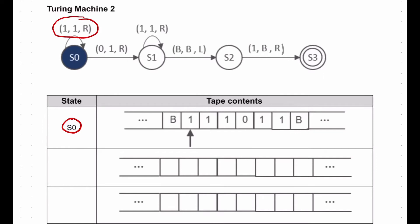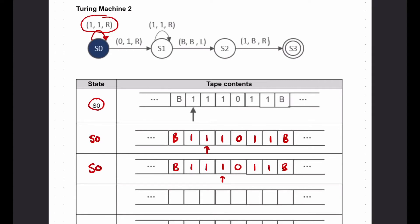The tape head is pointing at a 1, so I look at state 0 and find the rule to deal with a 1. The rule says if there's a 1 we write a 1 and move right - so it's not going to change anything writing a 1, but we move right. The arrow is self-referential, meaning it points back to itself, so we stay in state 0. We're pointing at a 1 again, so we follow the same rule: write a 1, move right.